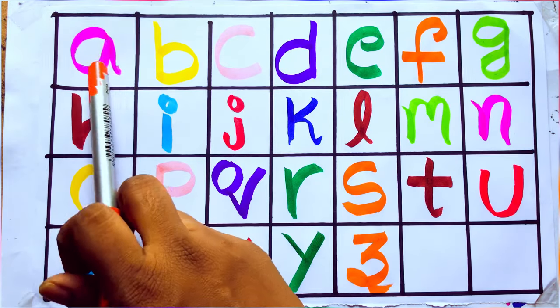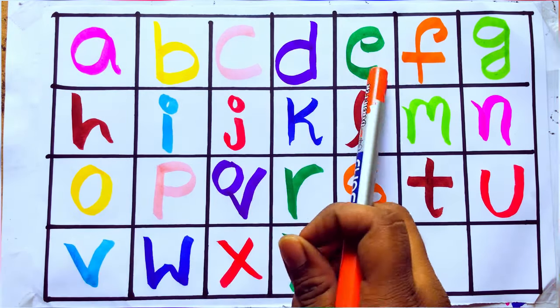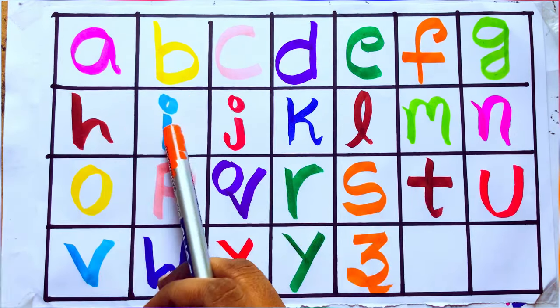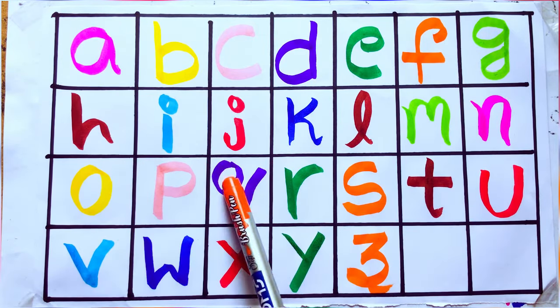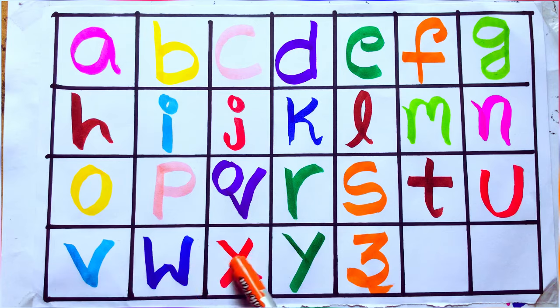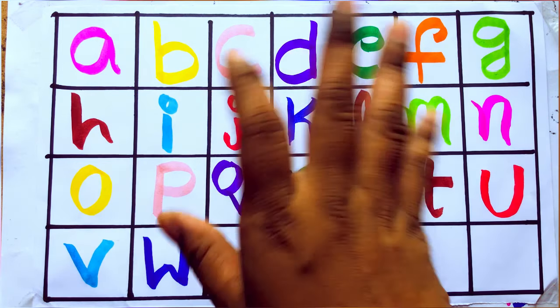Now let's review the alphabets. A, B, C, D, E, F, G, H, I, J, K, L, M, N, O, P, Q, R, S, T, U, V, W, X, Y, Z. Okay, bye kids.